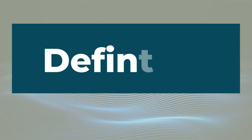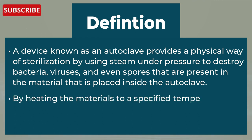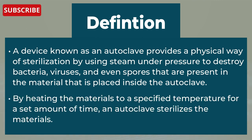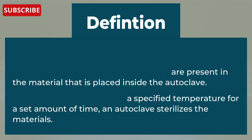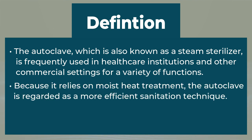Let's begin with the definition of autoclave. It is a device that provides a physical way of sterilization by using steam under pressure to destroy bacteria, viruses, or even spores that are present in the material placed inside the autoclave. By heating the materials to a specified temperature for a set amount of time, an autoclave sterilizes the materials. The autoclave, also known as steam sterilizer, is frequently used in healthcare institutions and other commercial settings. Because it relies on moist heat treatment, the autoclave is regarded as the most efficient sanitation technique.